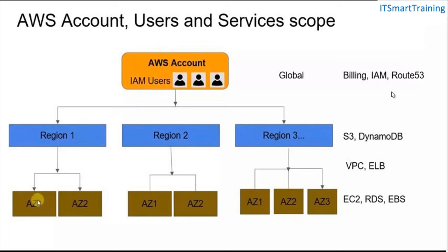Now I want to talk about AWS services, but first a quick overview of how these services, regions, and availability zones really map with each other. If you have an AWS account, the AWS account is a top level entity. I've configured a hierarchy here where the AWS account, regions, and AZs are mentioned. AWS account is a top level entity, which means once you have an AWS account you can deploy your infrastructure in any AWS region.